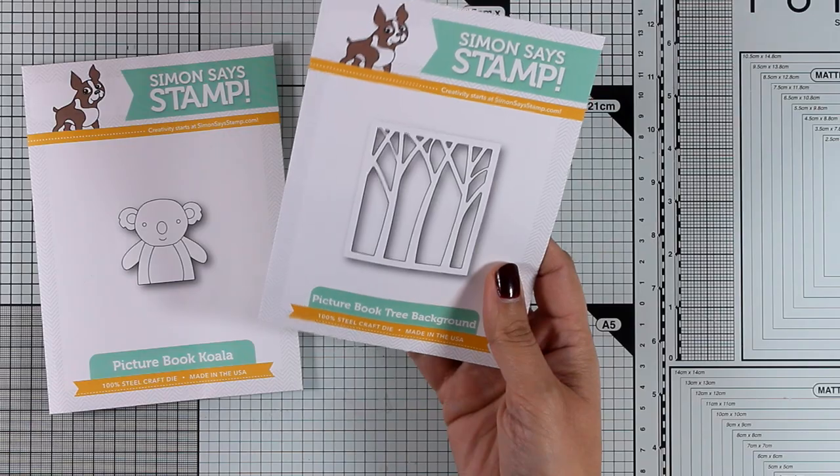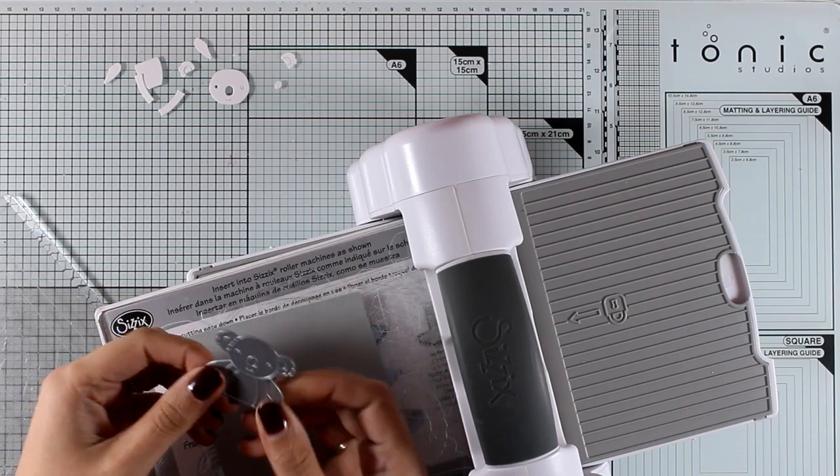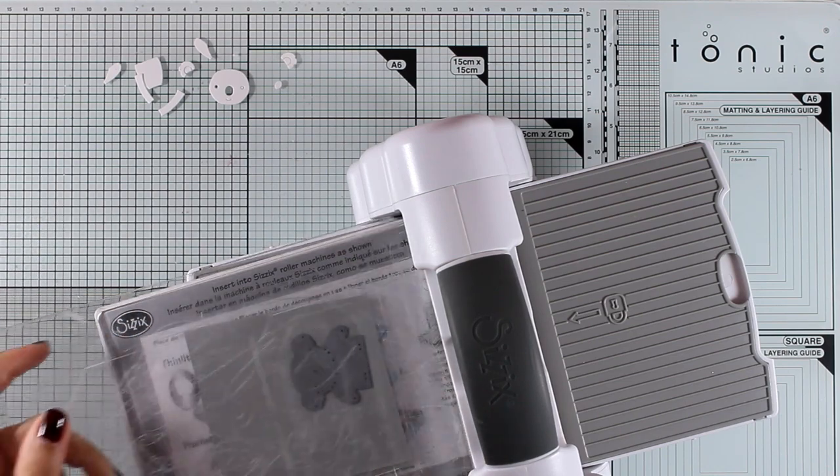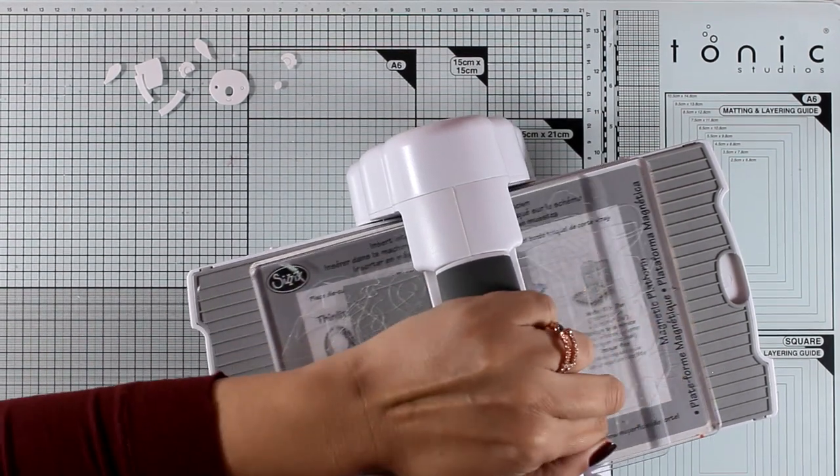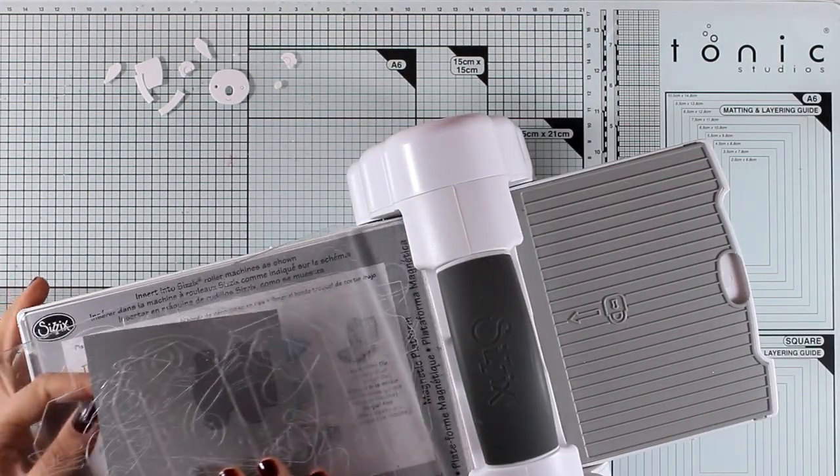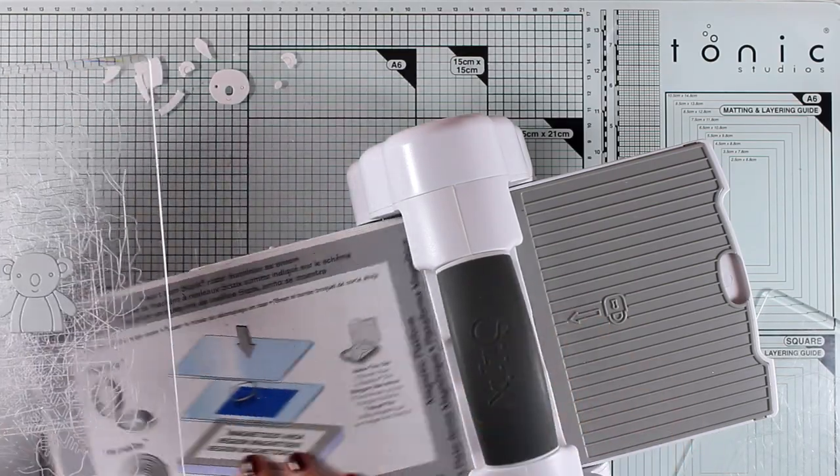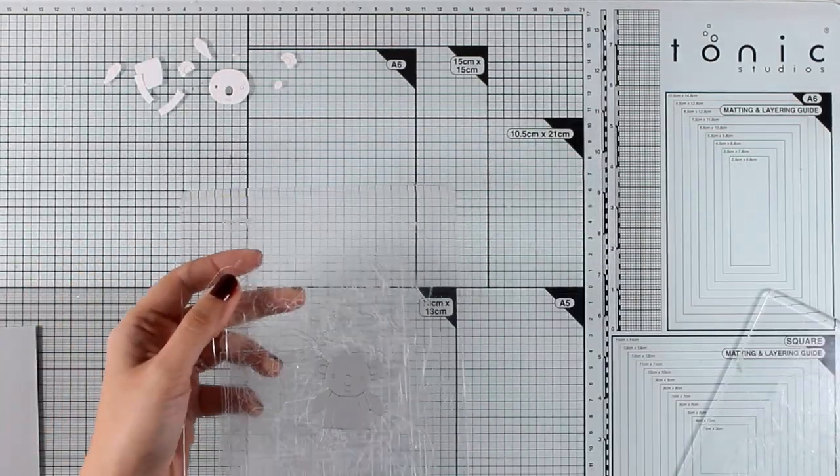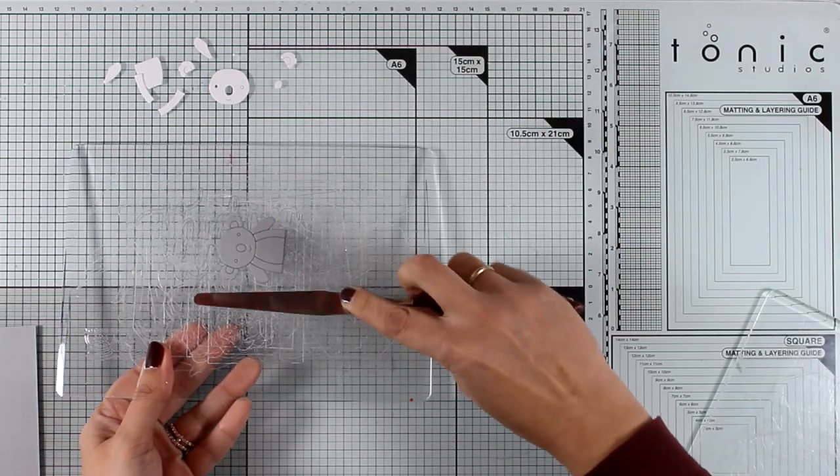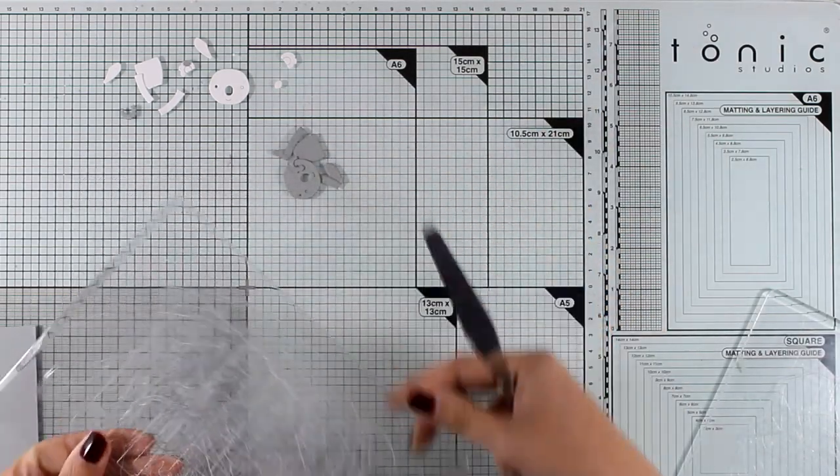And I am going to combine them with this die from a previous release that gives you a nice background with trees for your scenes with those Picture Book animals. I use the koala die to cut out the koala pieces out of white cardstock and out of gray cardstock. As you can see now, I will make sure that I won't lose any pieces since I will put everything back together, combining the two colors.